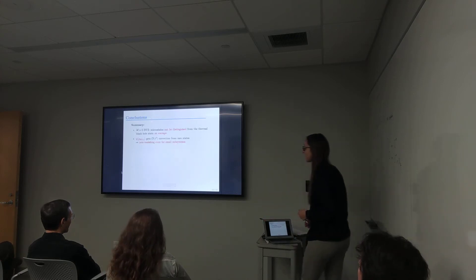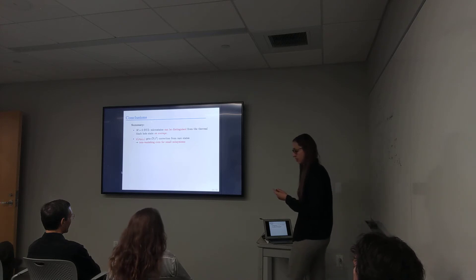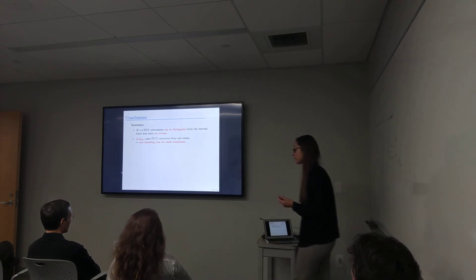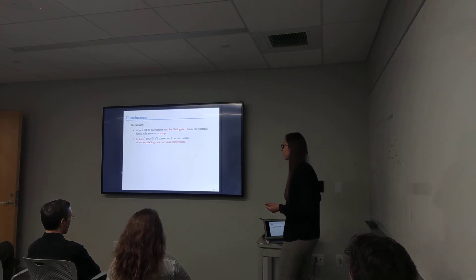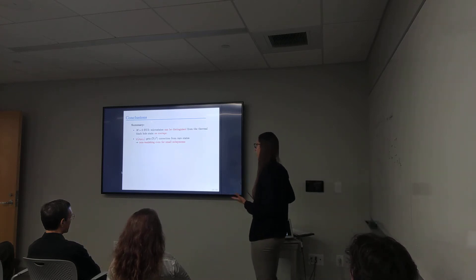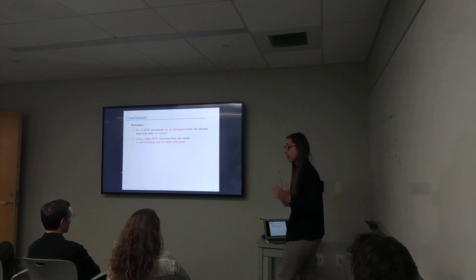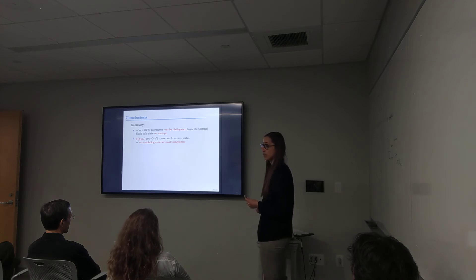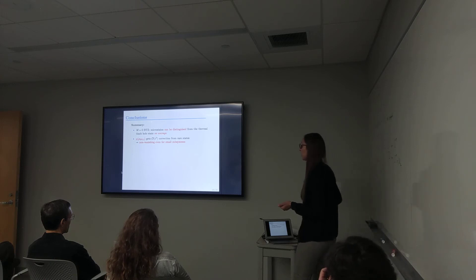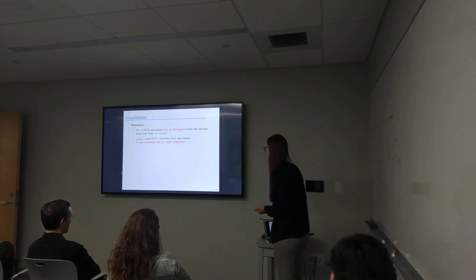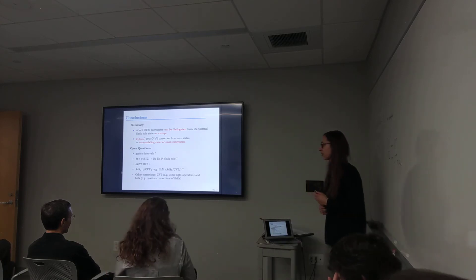So in particular systems in string theory where we know what the microstates are, we can compute this average relative entropy, which allows us to ask whether you can distinguish the microstate from the black hole on average. And I showed that even if you have just a tiny amount of CFT or space-time available, on average you can distinguish microstates from the black hole because of the properties of these rare states. Thank you for your attention.